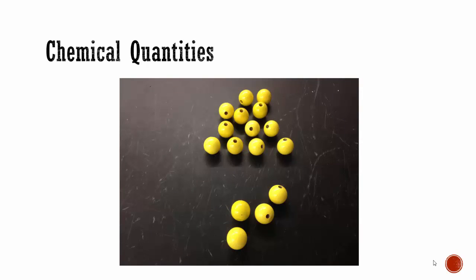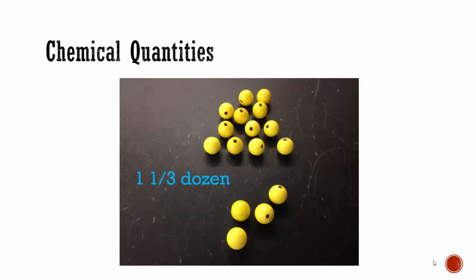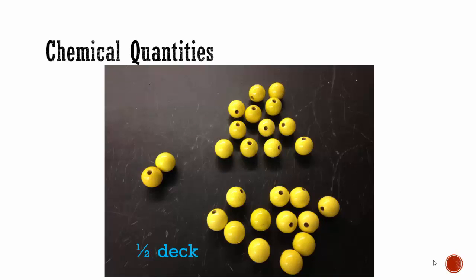Groupings can also be used as fractions. So if you count all of the yellow spheres here, you can report that you have one and a third dozen spheres. If you count all the spheres here, you could say that you have two and a sixth dozen, or you could report half a deck or 13 pairs. Each of those is equivalent.